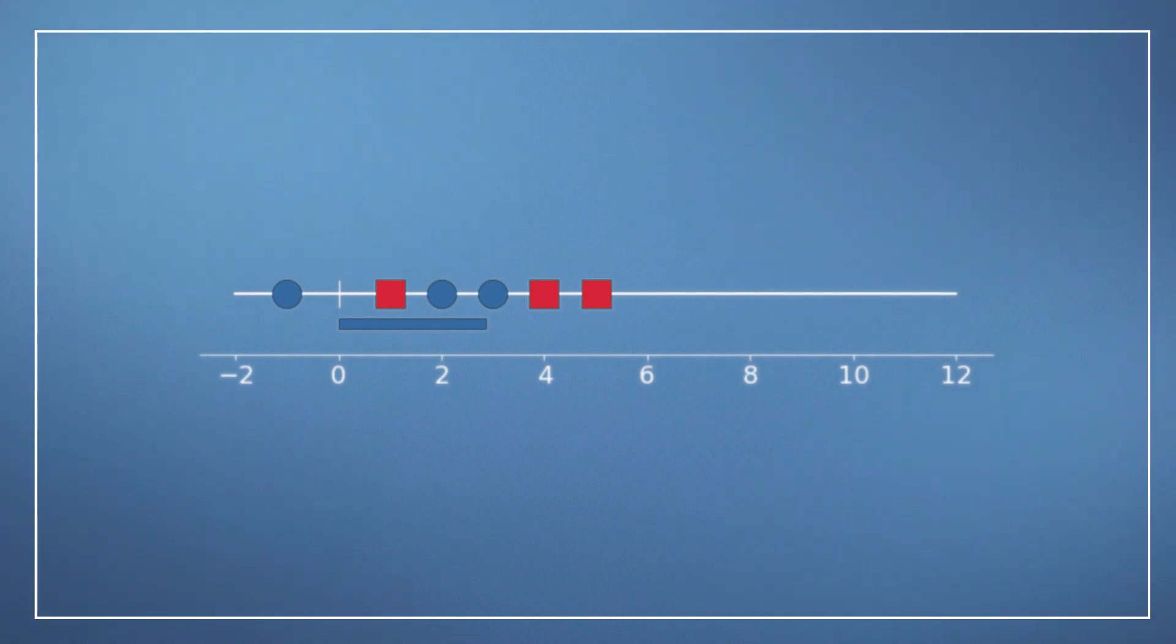The shifted data set is now given by the red dots and we shift every individual data point by 2. So the question is now, what happens to the variance? Well, the shift of the data does not really affect the relation of the data points among themselves. Therefore, the variance does not change. The variance is identical.